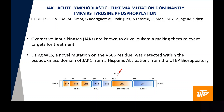Overactive Janus kinases are known to drive leukemia, making them relevant targets for treatment. Using collection sequence, a novel mutation of the B66 residue was detected within the pseudokinase domain of JAK1 from a Hispanic ALL patient from the UTEP biorepository.